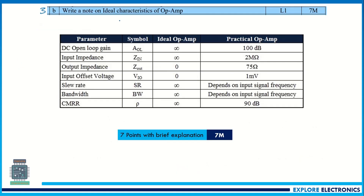Coming to question 3b, it is again on op-amp. They have asked to write a note on ideal characteristics of op-amp. This question is very important and is repeated many times in examinations. You need to mention only the ideal op-amp characteristics. I have also listed the practical values, because you may get a question to write both ideal and practical op-amp characteristics.